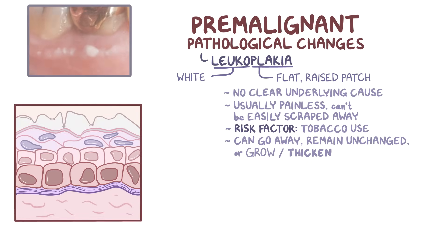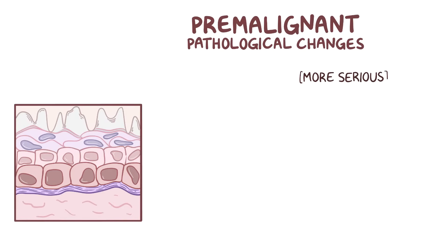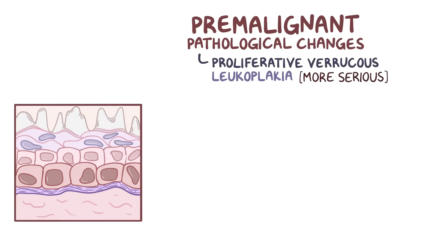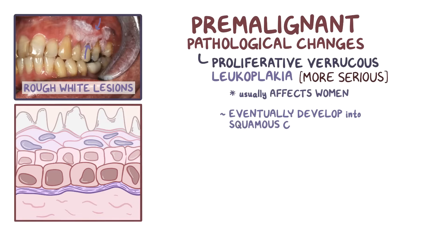If it becomes bumpy, it's called nodular leukoplakia. And if it becomes wart-like, it's called verrucous leukoplakia. A more serious form is called proliferative verrucous leukoplakia, which usually affects women with no risk factors. It has a predilection for gingival tissue and causes multiple rough white lesions that grow and spread, and in most cases eventually develops into squamous cell carcinoma.